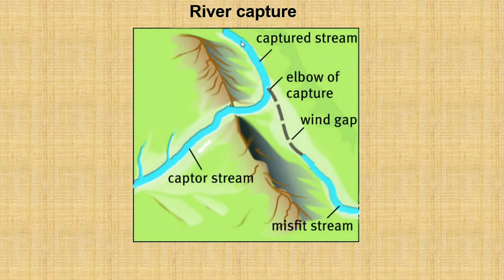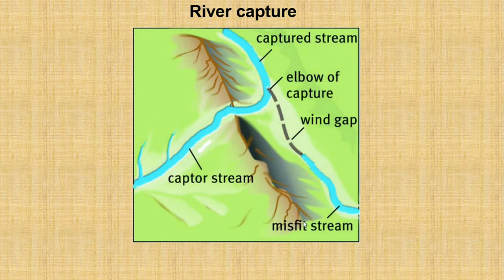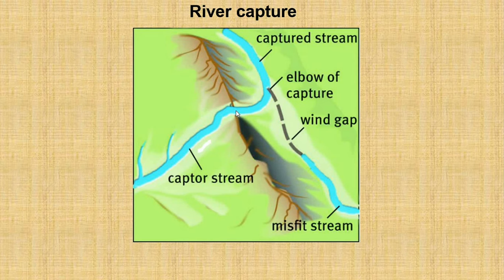This is a typical example of what you need to know or memorize when we talk about river capture. We talk about the capture stream, the elbow of capture, the wind gap, the watershed, and the misfit stream. Please take note of this because you will be given a diagram and sometimes asked to label these features.